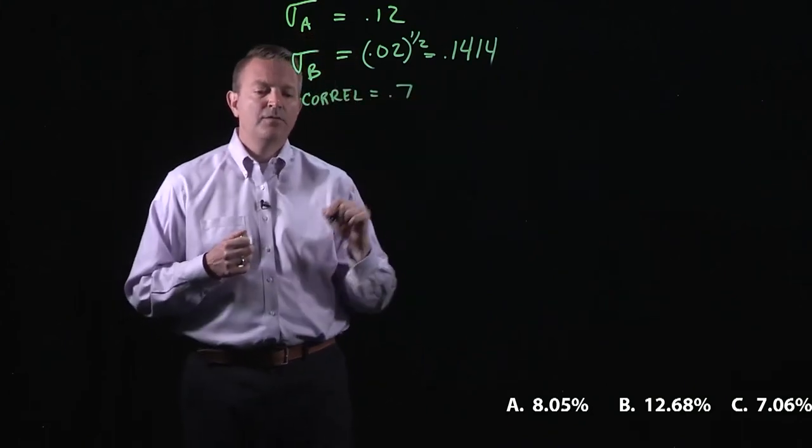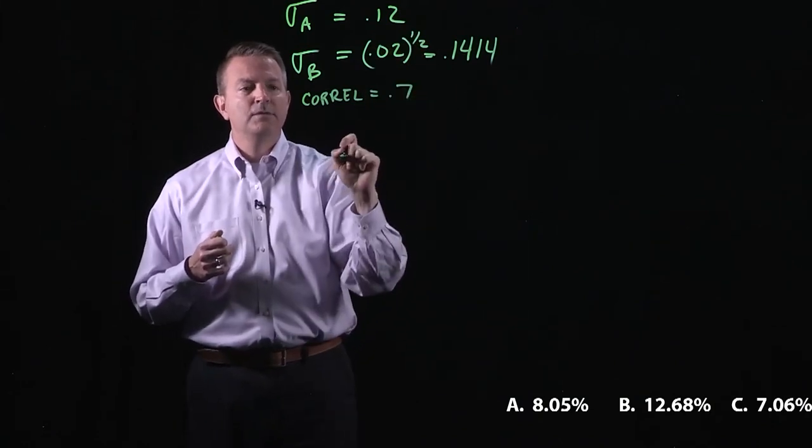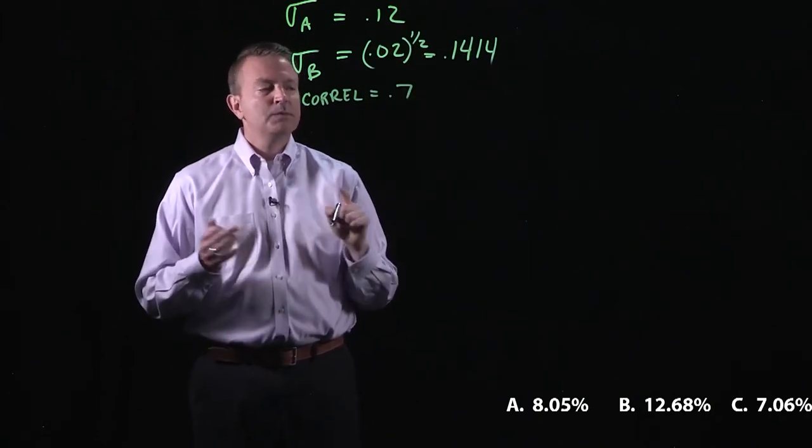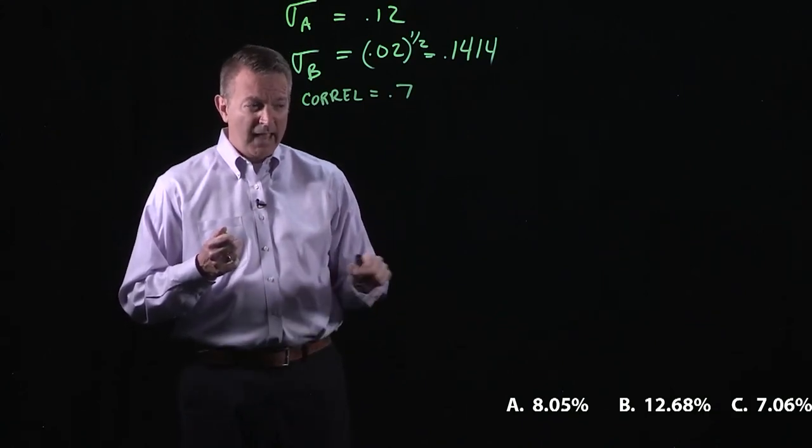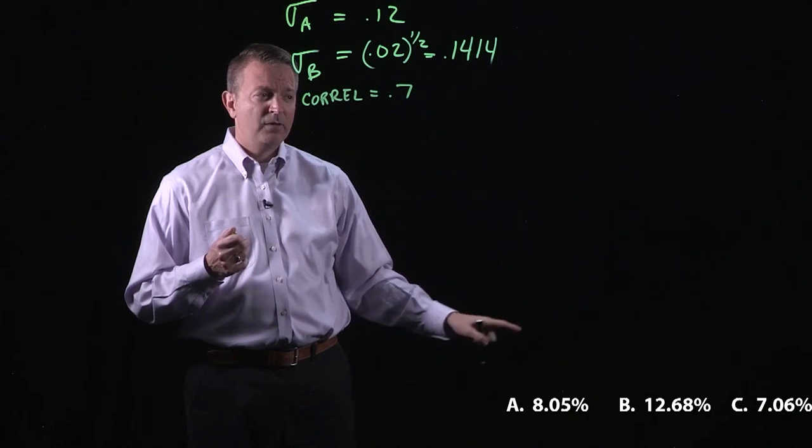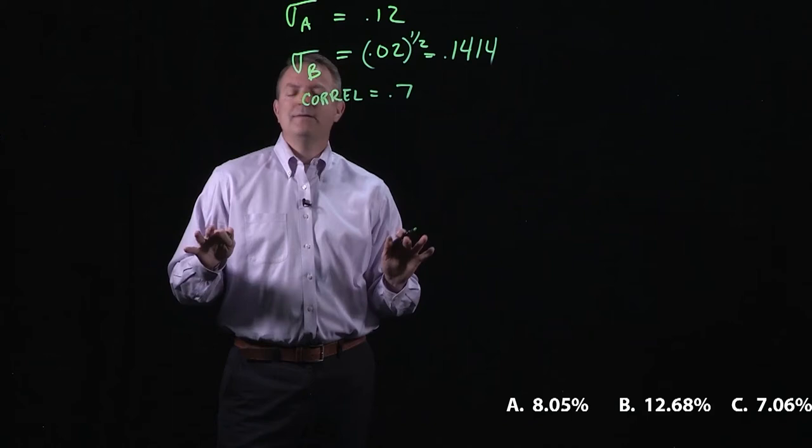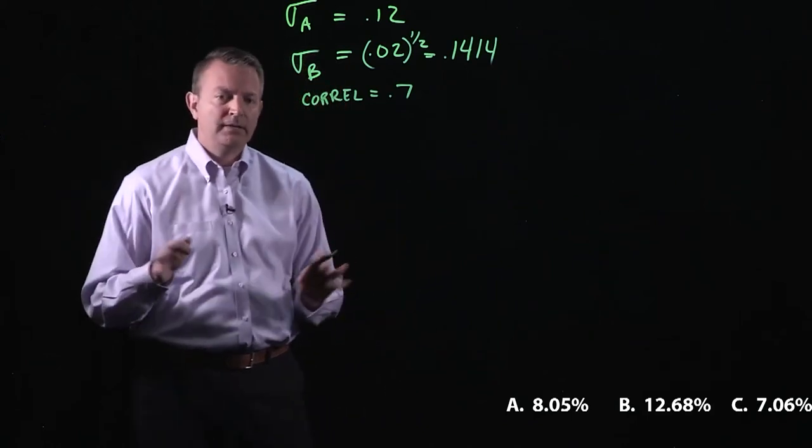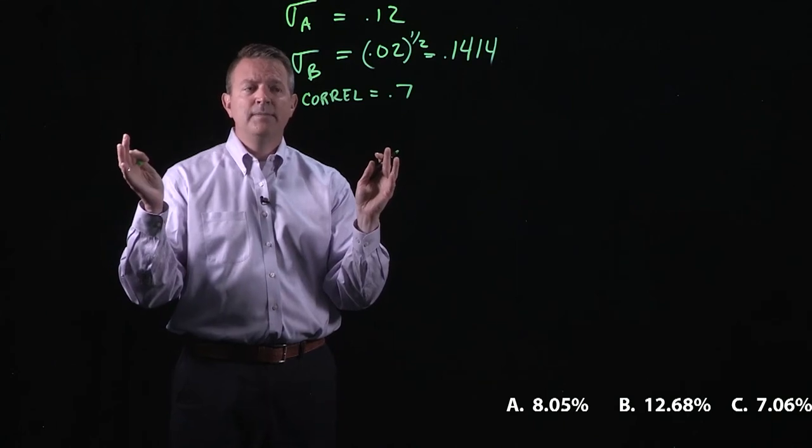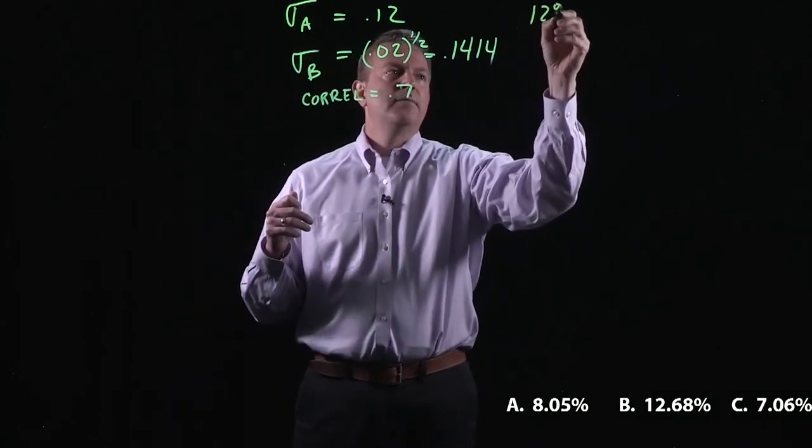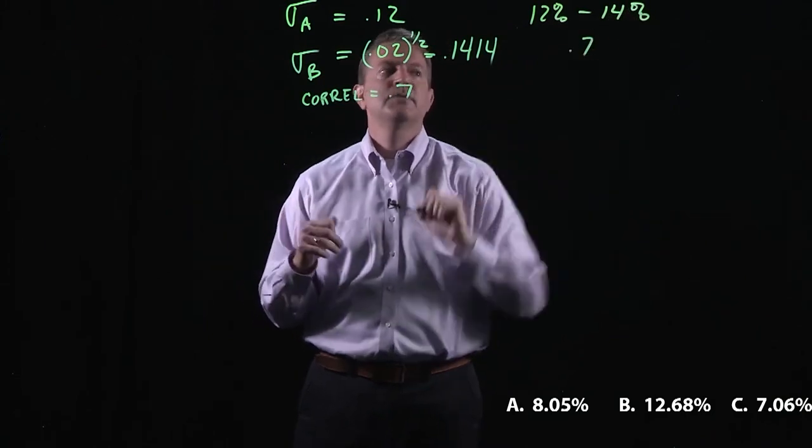So if you have 0.12 standard deviation of one, 0.14, and a correlation of 0.7, once we start to look at, in the bottom right hand of the screen, 8% for the portfolio, 12.68, or 7, I'm hoping that if you're stressed on exam day, freaking out a little bit, can't remember the equation, and you're saying, which one could it possibly be? Think about this. You go from 12% to 14%, and you have a 70% correlation.